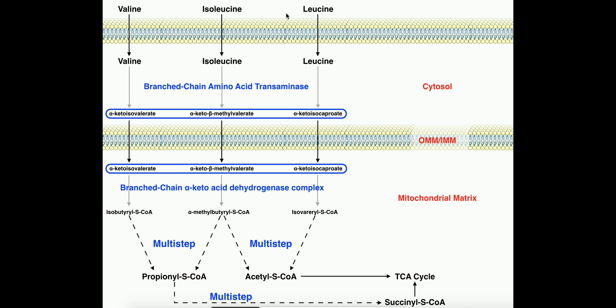They're called branched chain amino acids because if you actually were to look at their chemical structures, their R groups, they have aliphatic or hydrocarbon chains that happen to be branched. Like you could go look up those structures right now and you would see that.